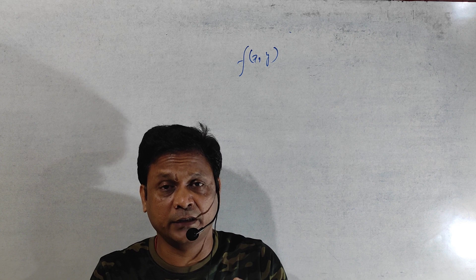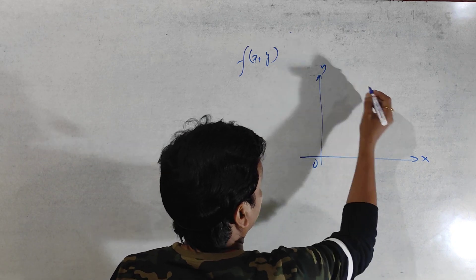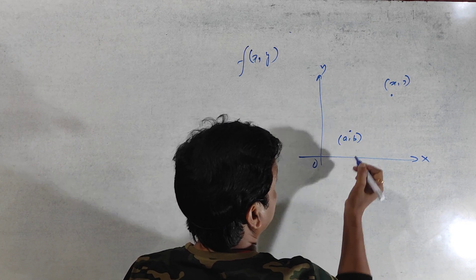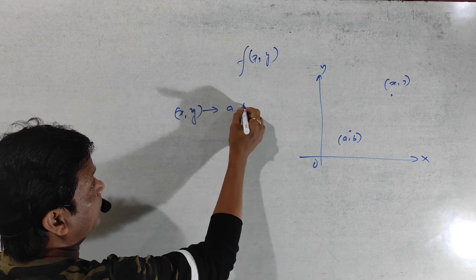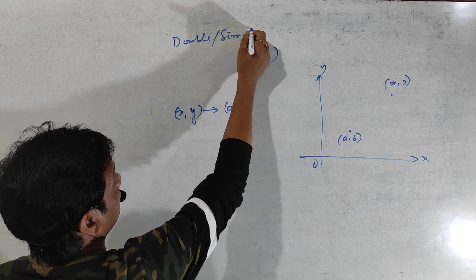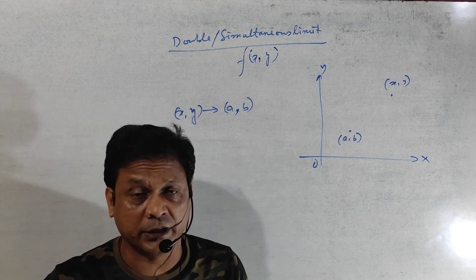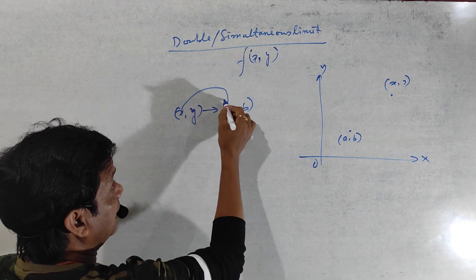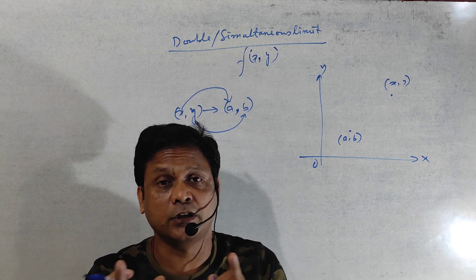That means both x and y will move at a time. Graphically I am showing you — this is an x, y point, and this point is (k, b). My question is that as (x, y) approaches (k, b). Double limit or simultaneous limit means at a time: when x approaches k, at the same time y approaches b. Not one after another — if one after another, then it is called repeated limit.